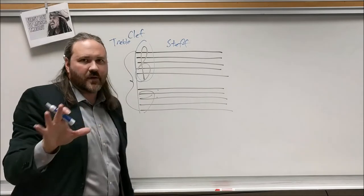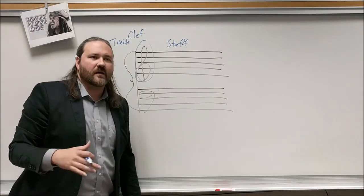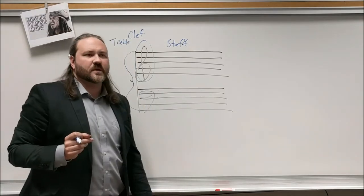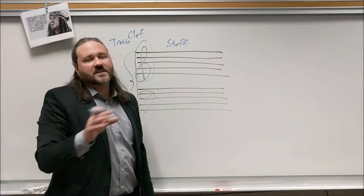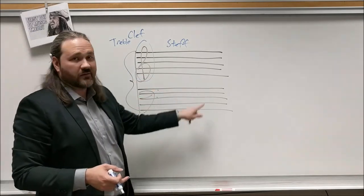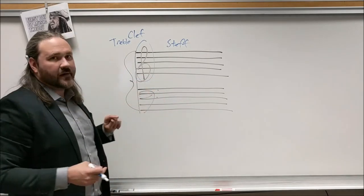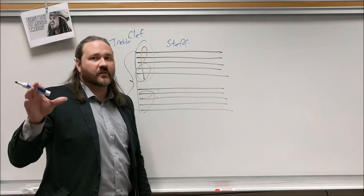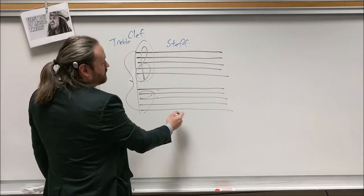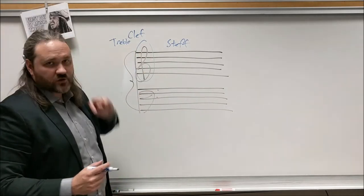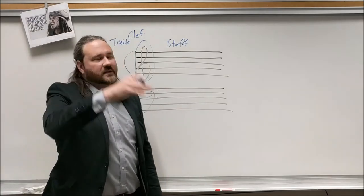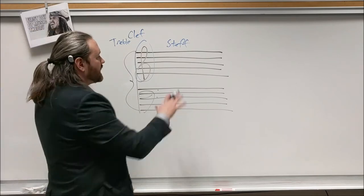This is called the treble clef, used for any high-pitched instrument — flute, violin, soprano vocalists all read in treble clef. It's also used for transposing instruments like bass clarinet, which technically reads in treble clef though the pitches sound down in the bass clef range. Guitar reads in treble clef but sounds an octave lower than written.